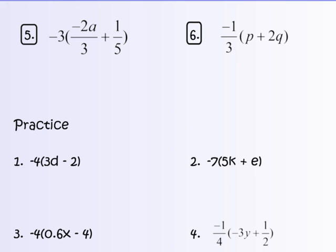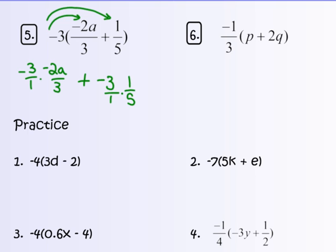Number 5: distributing negative 3 to a fraction. It's negative 3 over 1 times negative 2a over 3, and negative 3 times 1 fifth. I can cross-cancel those 3s, so it becomes negative 1 times negative 2a, which gives 2a. And negative 3 times 1 fifth gives negative 3 fifths. So the final answer is 2a minus 3 fifths.